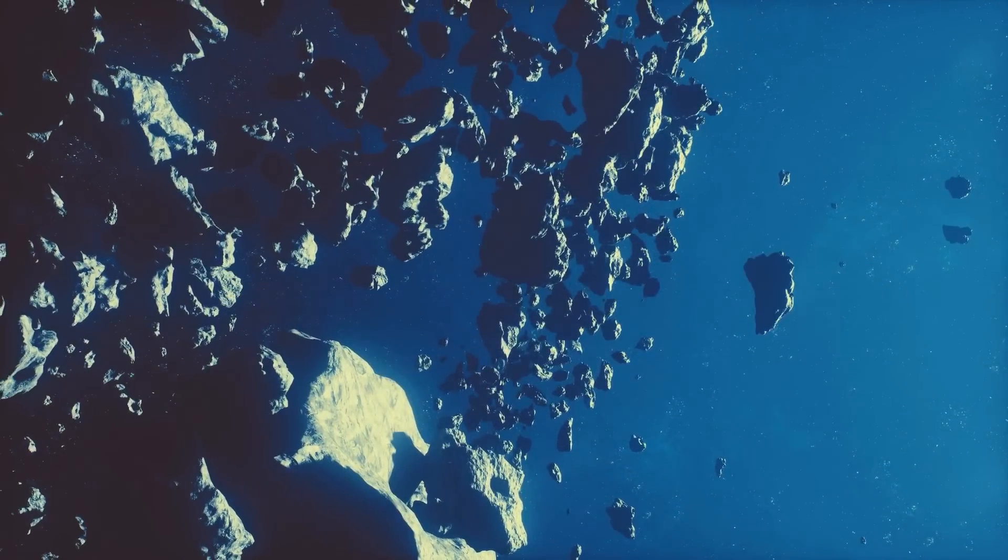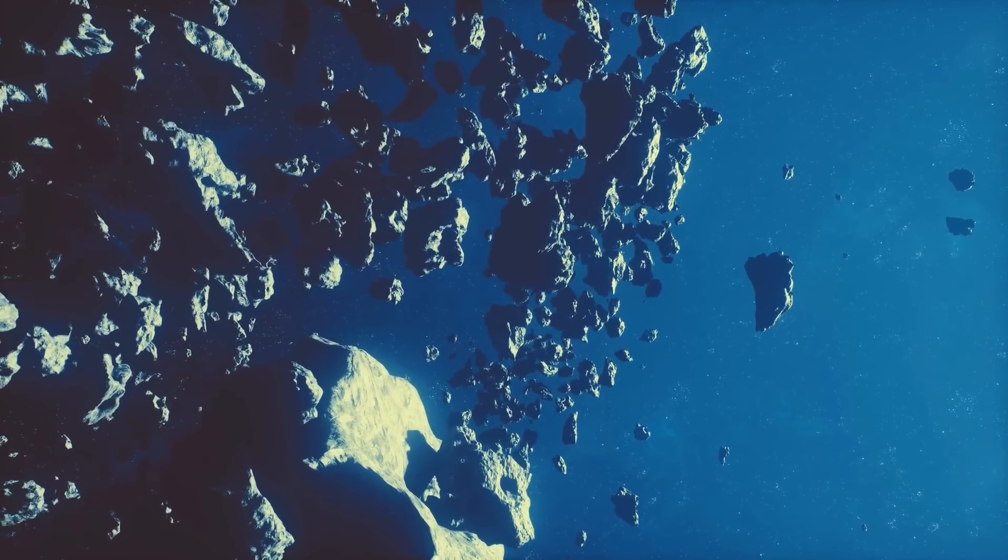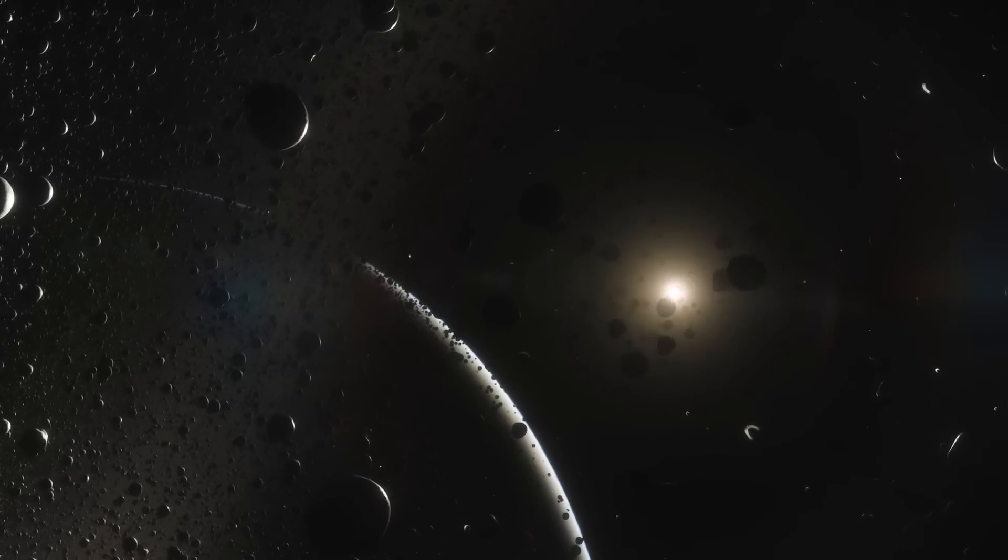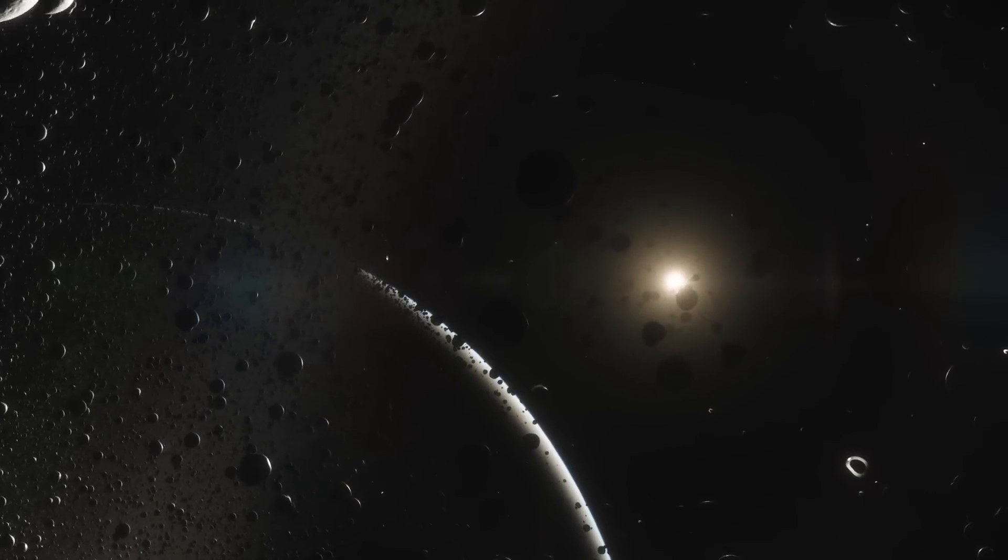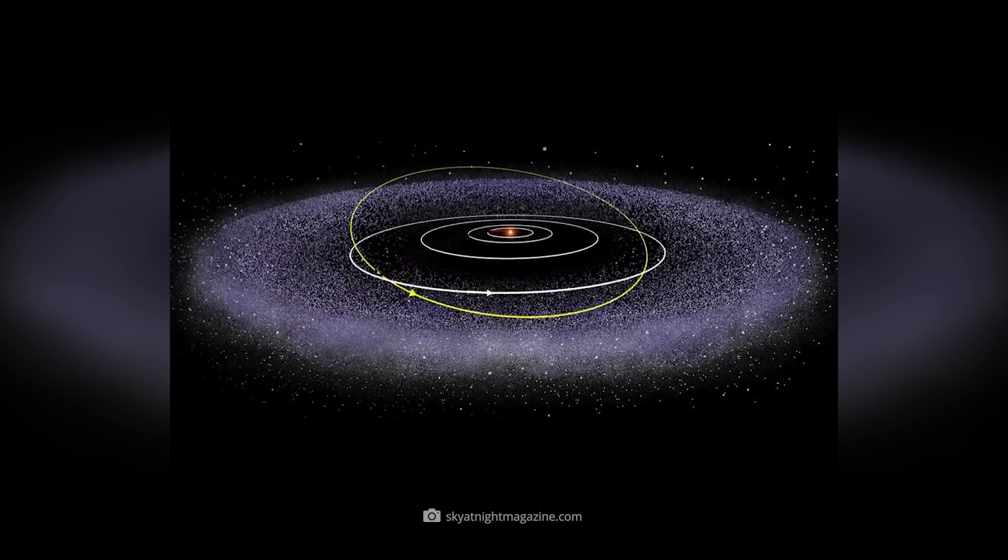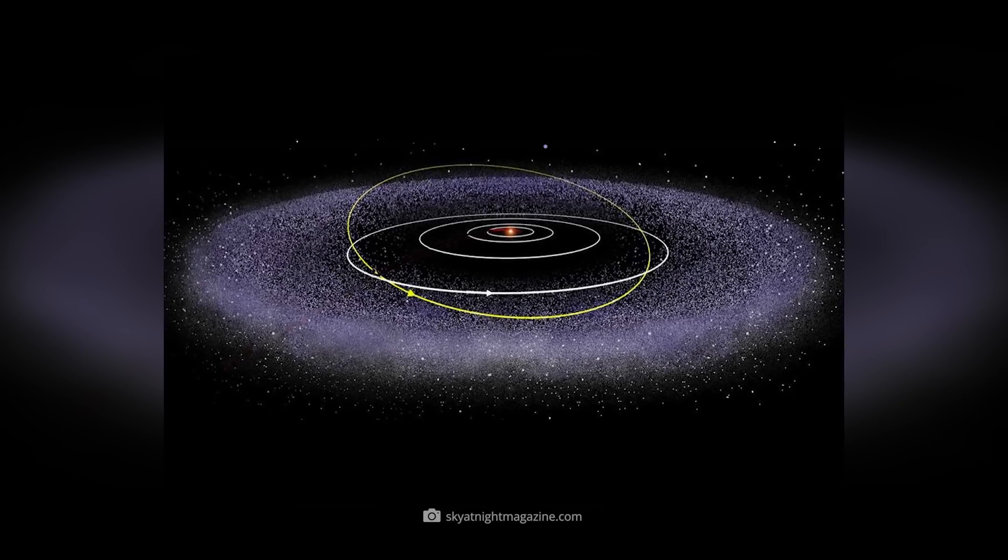The Kuiper Belt begins around 4.5 billion kilometers from the sun and ends up to 7.5 billion kilometers from the sun. It thus forms the outermost edge zone of the solar system.